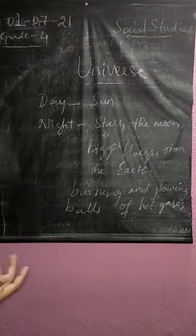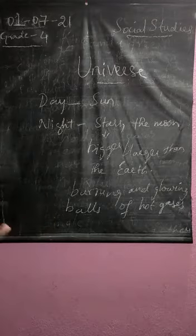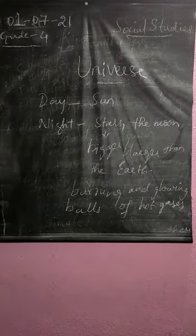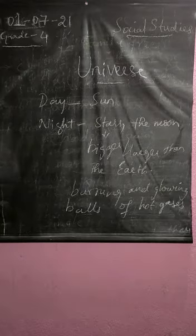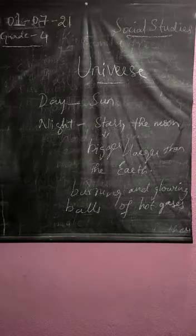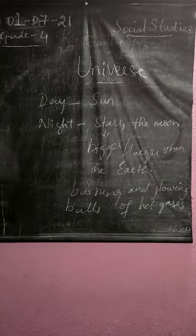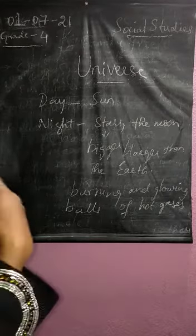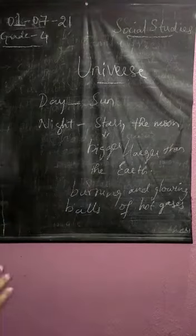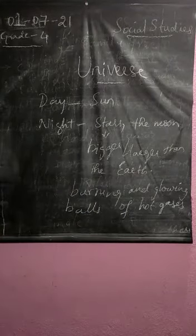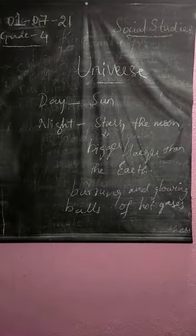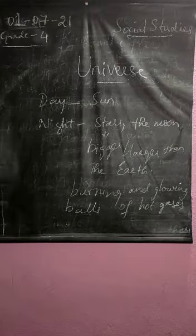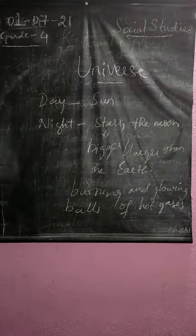The stars are the burning and glowing balls of hot gases. They are not as we see what we see with our naked eye. When you gaze at the sky, you find millions and trillions of stars. Why do they look like twinkling? Because they are made up of hot gases.